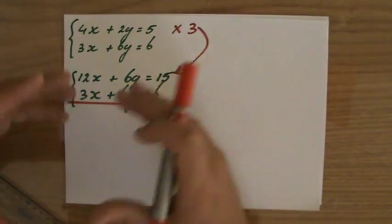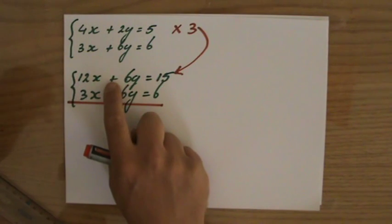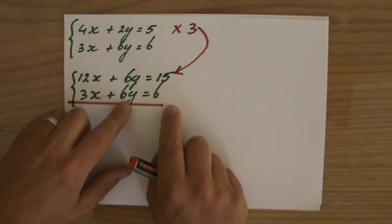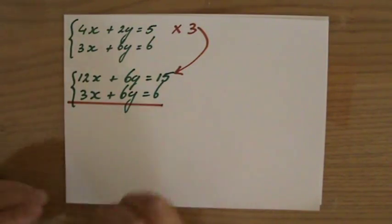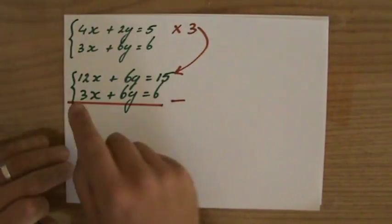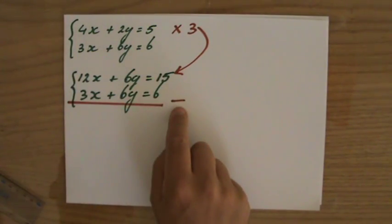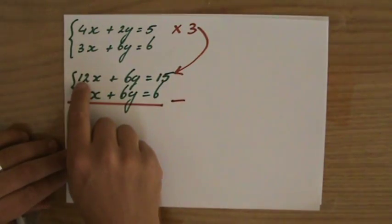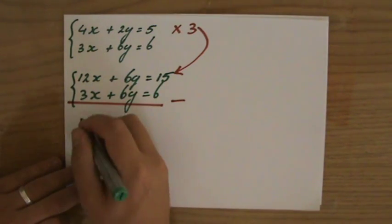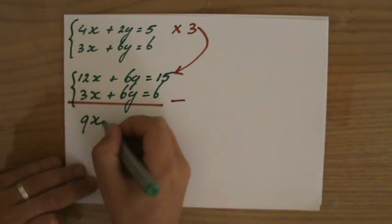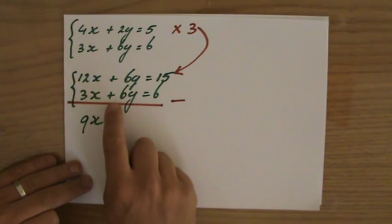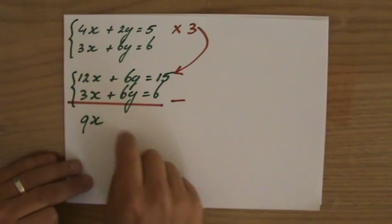And you really have to be careful with those signs. A positive 6y minus a positive 6y. Now you will have eliminated it. So it is minus. But I use my finger. 12x minus, sorry. I start over. 12x minus 3x. That is 9x. And I'm still checking myself. 6y minus 6y. And I really take care of those signs.